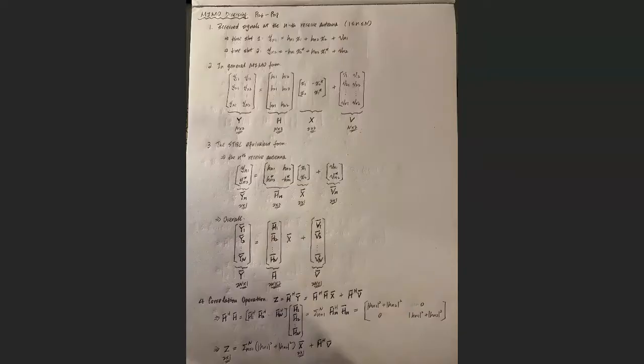If you have more than one receive antenna, for the general MIMO form you have a bigger fading matrix and a bigger received signal matrix, but the transmission pattern is the same. When you derive the equivalent form to establish the relationship between X1, X2 and the output signal, you model the received signal for each receiver antenna and then stack them together, getting a really large Y and a really large H. That's what you get in your coursework.